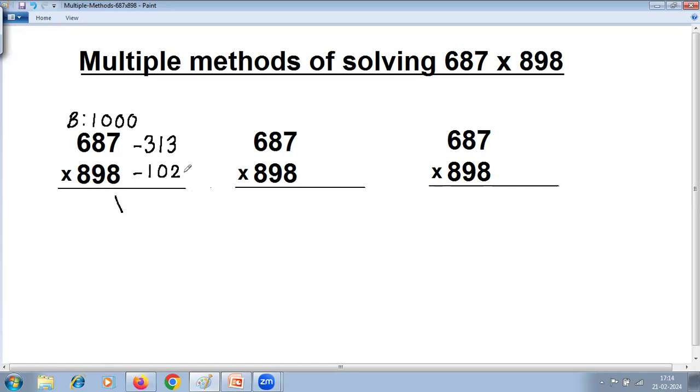Now multiply differences using vertically crosswise method. 3 into 2 is 6. 3 plus 0 is 2. Next, 3 into 2 is 6, 3 into 1 is 3. 6 plus 3 is 9, 9 plus 0 is 9. 0 plus 1 is 1. Last step, 3 into 1 is 3.